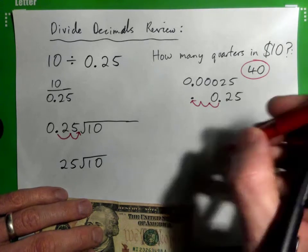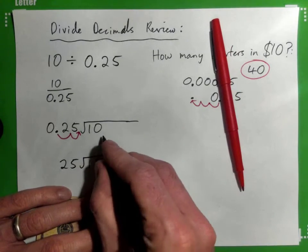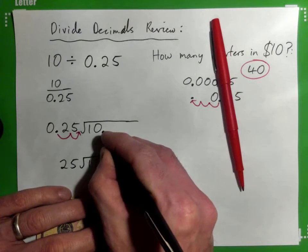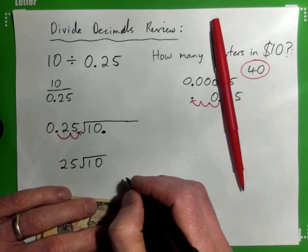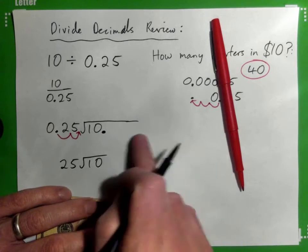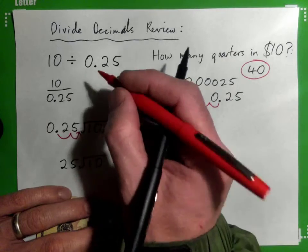The thing is, by the way, the decimal point for the 10 is here. The reason we have to move that over to the right is because to turn 0.25 into 25, we have to multiply by something.